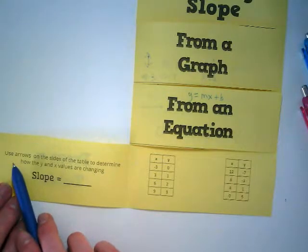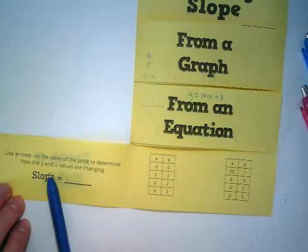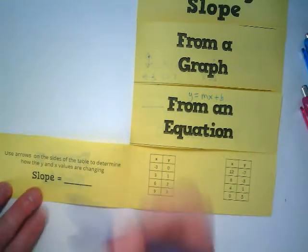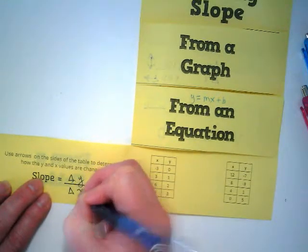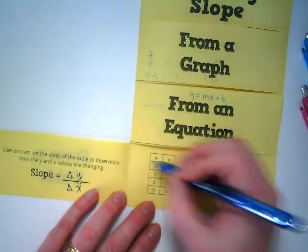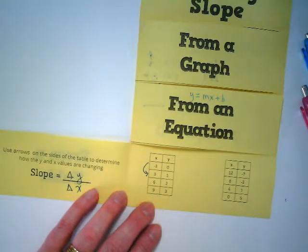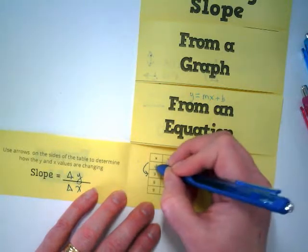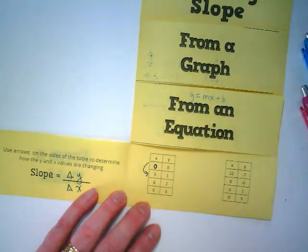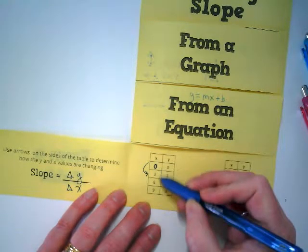The directions say, use arrows on the side of the table to determine how the y value and the x values are changing. Because remember, slope is the change in y over the change in x. So if I go from this to this, what is the difference there? I'm noticing from my work, this is a typo. Change this to 0. It's the only one that's different from the rest.